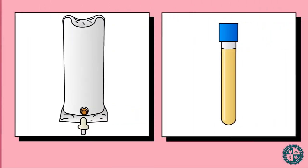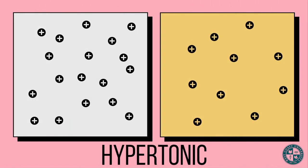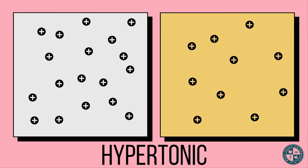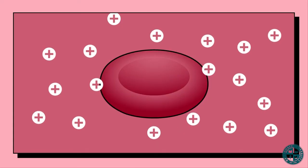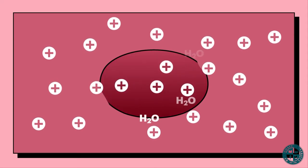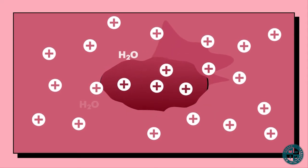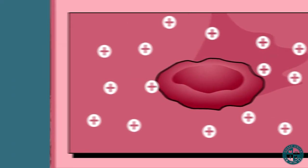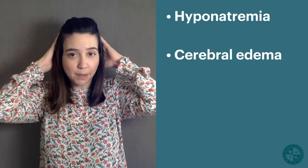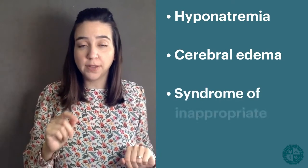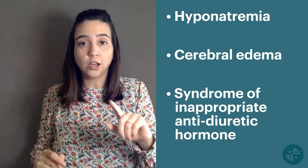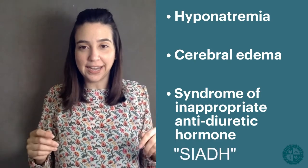Hypertonic solutions have a greater osmolarity than plasma, and this will help pull water out of the cell and into our intravascular compartment, which will cause the cell to begin to shrink. This type of solution is frequently used to treat hyponatremia, cerebral edema, and syndrome of inappropriate anti-diuretic hormone, also called SIADH.